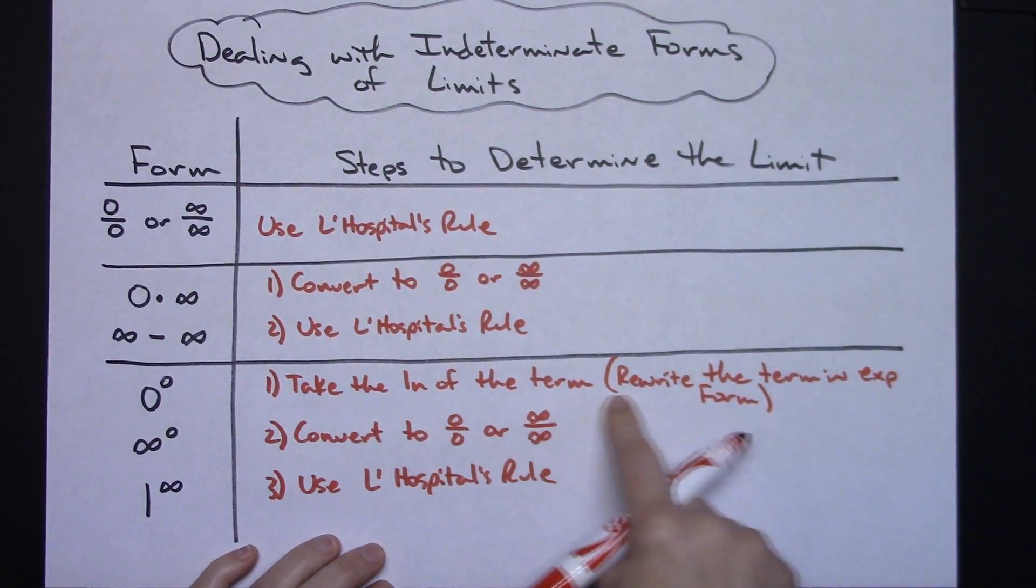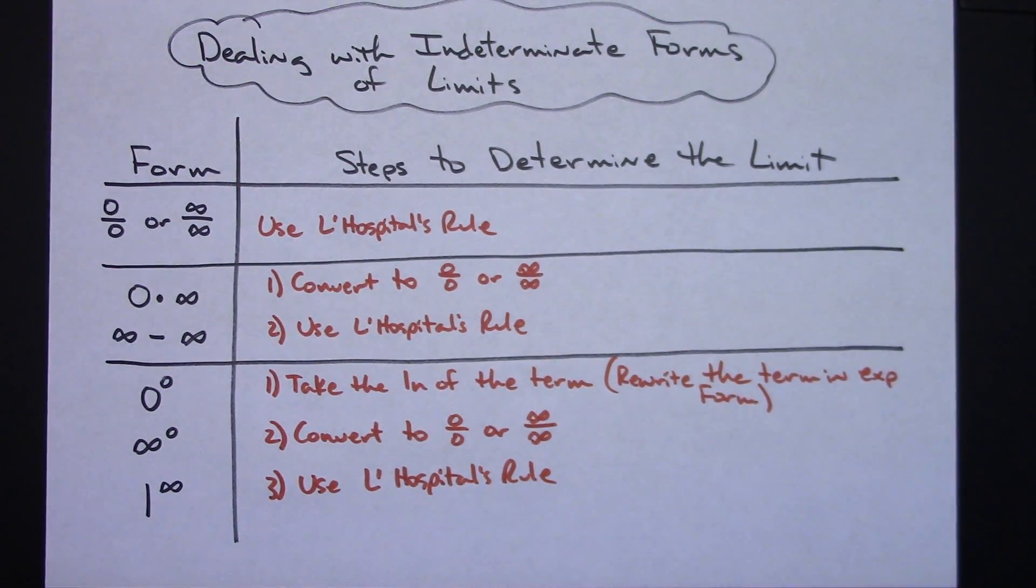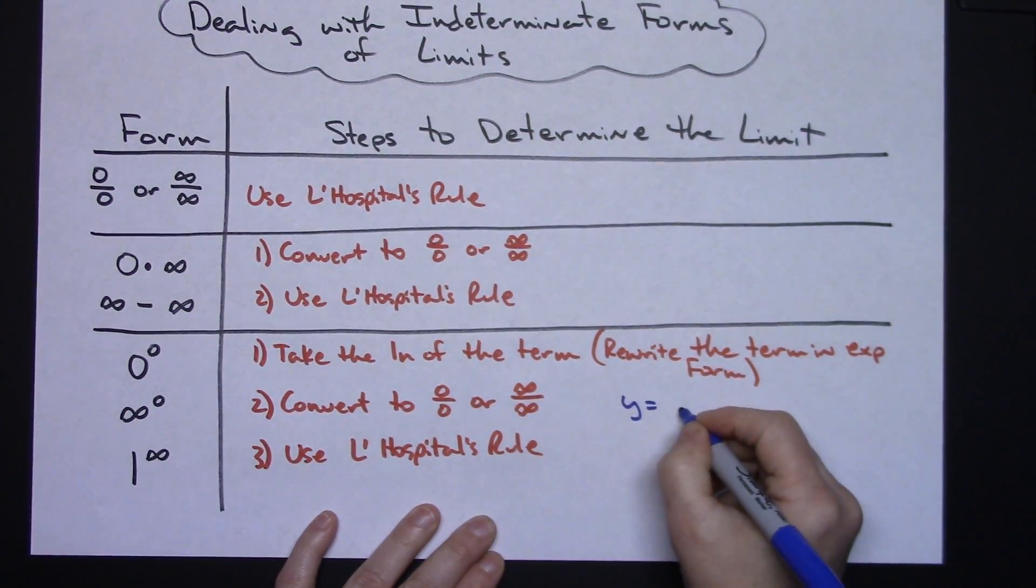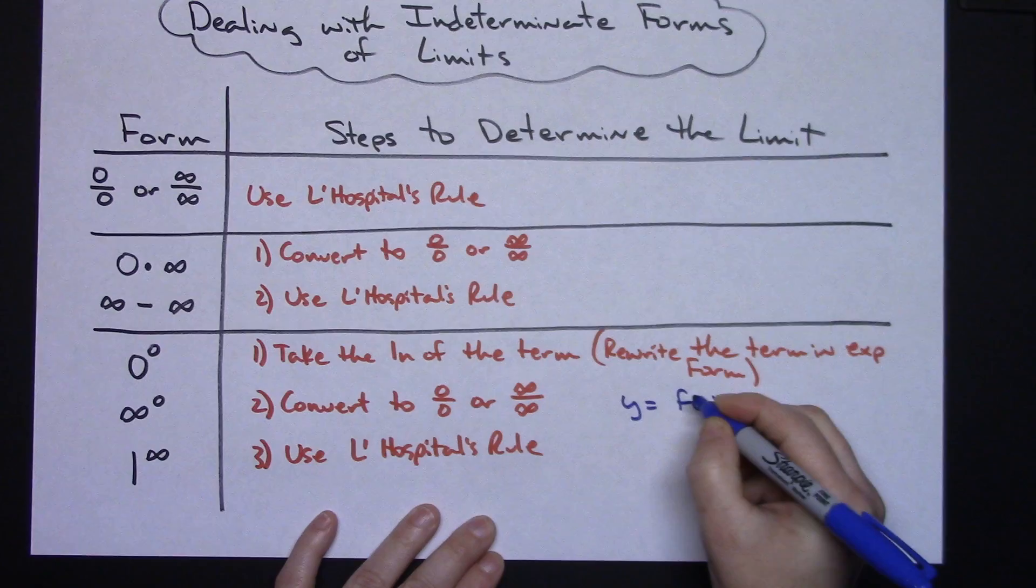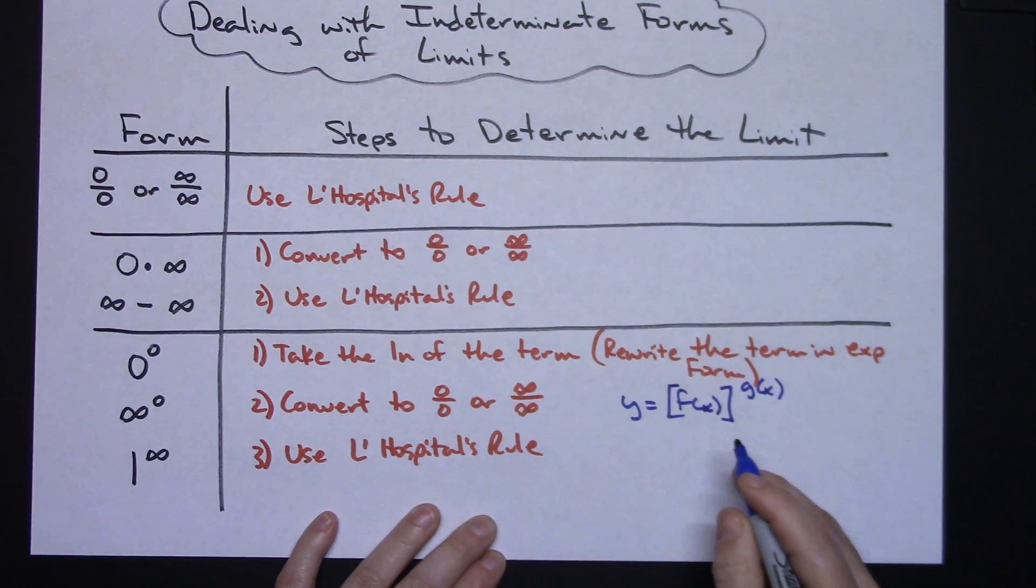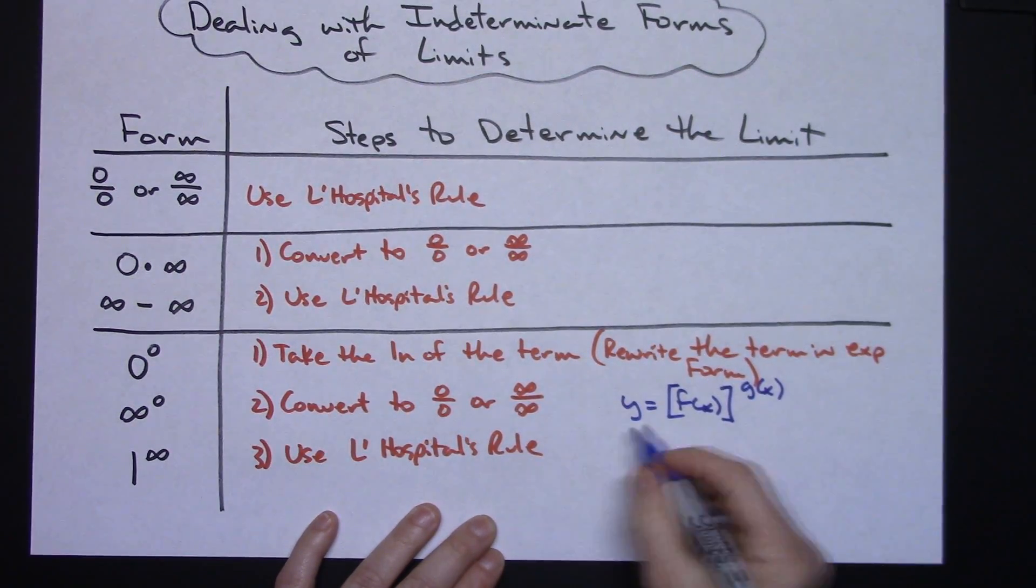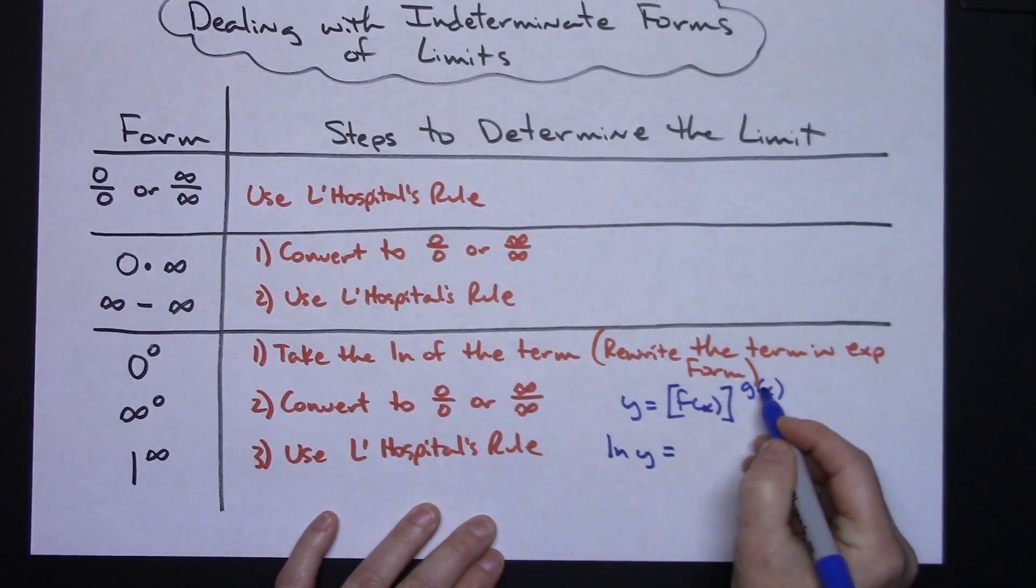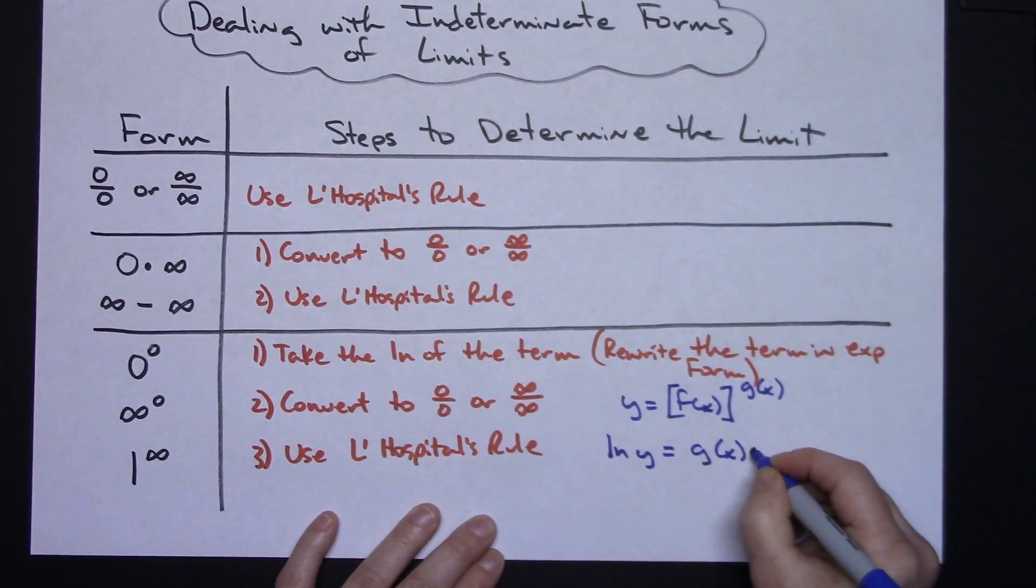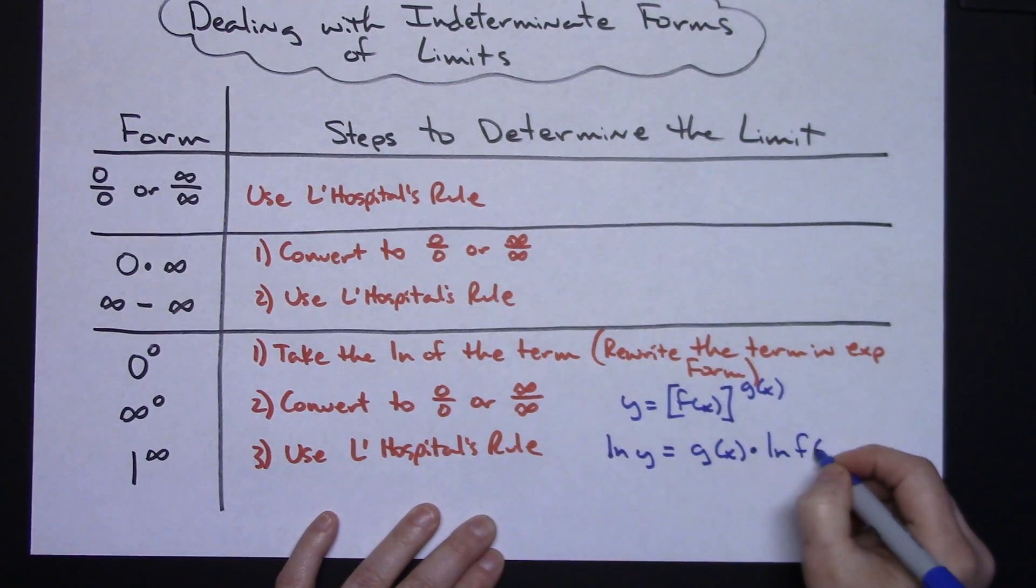Now let's take a look at rewriting the term in exponential form. So what I'm referring to there, let's suppose I had y equals a function, say f of x, and then that was raised to another function g of x. We're going to want to convert that by taking the log of both sides. So I could do the natural log of y equals, if I bring that g of x down in front, then I would have g of x times the natural log of the f of x function.